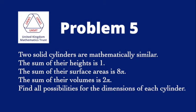Problem 5. Two solid cylinders are mathematically similar. The sum of their heights is 1. The sum of their surface areas is 8π. The sum of their volumes is 2π. Find all possibilities for the dimensions of each cylinder.